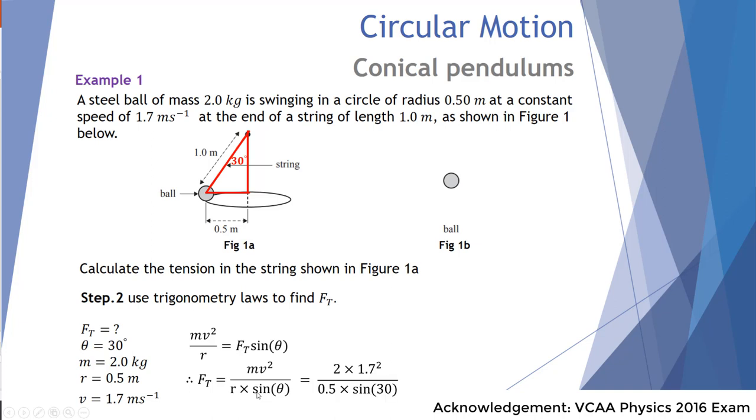We can then sub in our values where mass was 2, speed was 1.7 m/s, radius was 0.5 and angle was 30. When we do that, that also gives us an answer of 23 newtons, the same as our first technique using the Pythagoras technique.